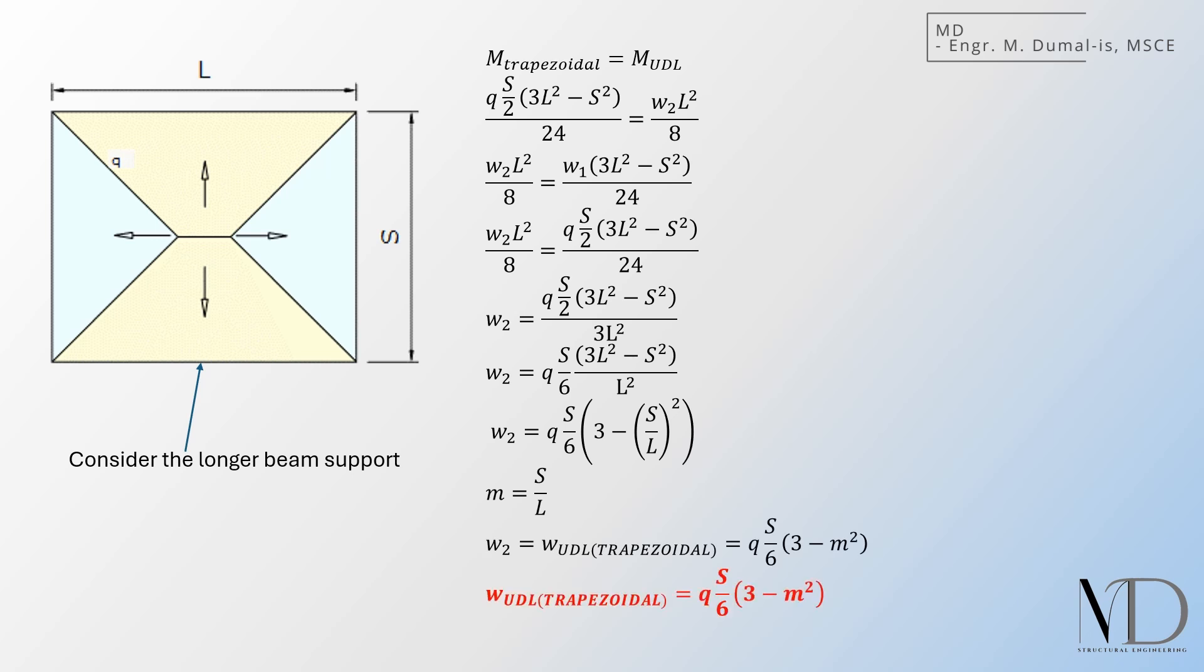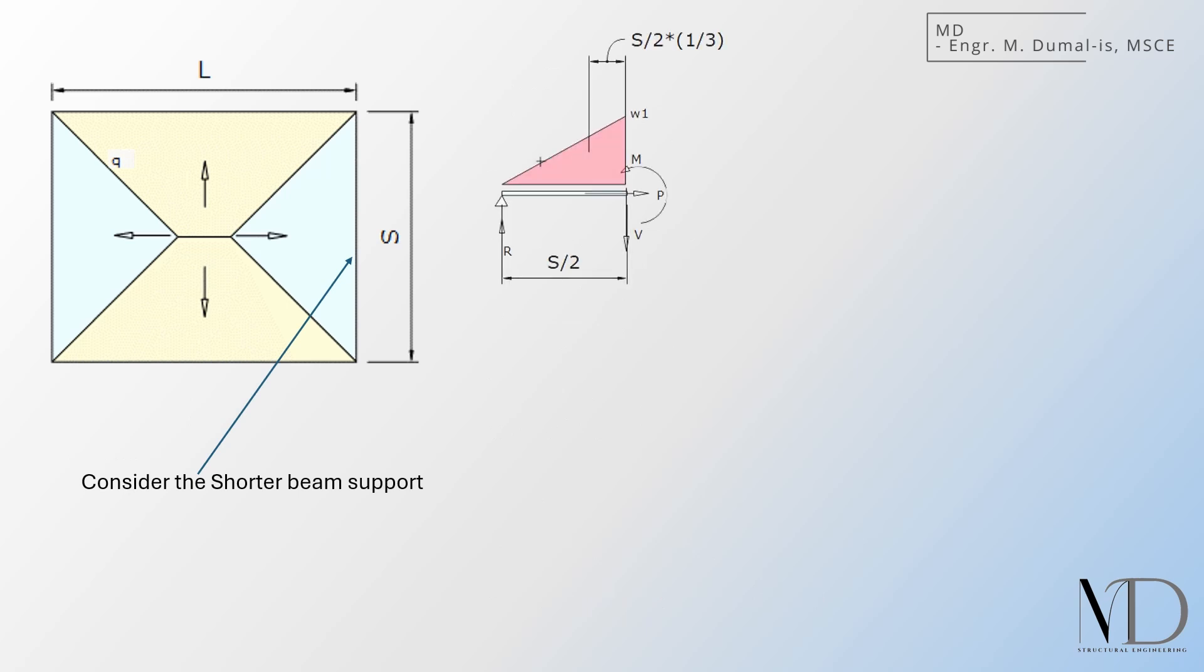The same concept is to be applied at the shorter span, assuming that the maximum moments are equal, and so the equivalent UDL for along the shorter span using equivalent maximum moment can be obtained.